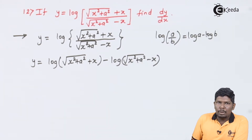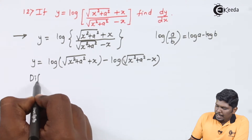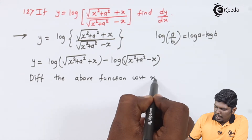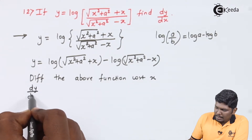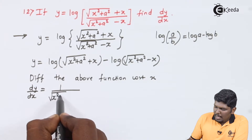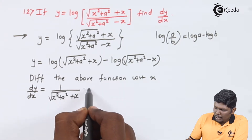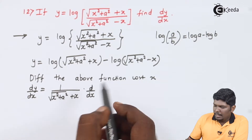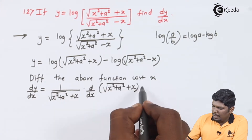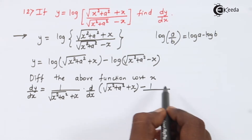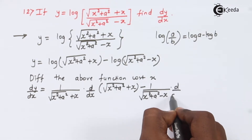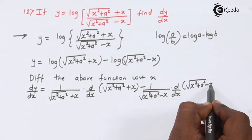Now both are composite functions and can be solved using the chain rule. Differentiating with respect to x: derivative of log x is 1 by x, so we get 1 upon under root x squared plus a squared plus x, multiplied by the derivative of under root x squared plus a squared plus x. Minus 1 upon under root x squared plus a squared minus x, multiplied by d by dx of under root x squared plus a squared minus x.